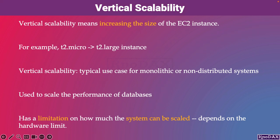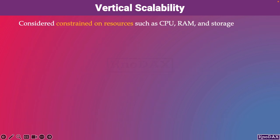Vertical scalability has a limitation on how much the system can be scaled. Vertical scalability depends on the hardware limit. A vertically scalable system is considered constrained on resources such as CPU, RAM, and storage. The resource constraints negatively impact the overall system's performance.